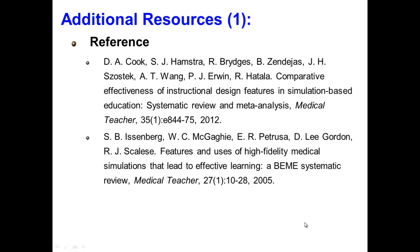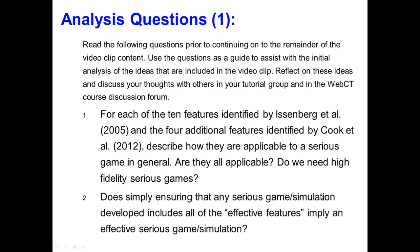This brings us to the end of our discussion on effective features. The references are: first, Cook et al. in 2012, and second, Eisenberg et al. in 2005. Analysis questions: Number one — for each of the ten features identified by Eisenberg et al. 2005 and the four additional features identified by Cook et al. 2012, describe how they are applicable to a serious game in general. Are they all applicable? Do we need high-fidelity serious games? Number two — does simply ensuring that any serious game or simulation developed includes all of the effective features imply an effective serious game or simulation? This is the end of this video clip. Thank you.